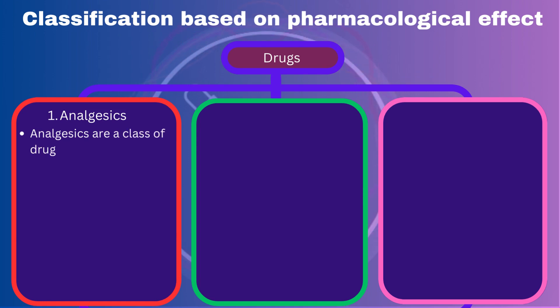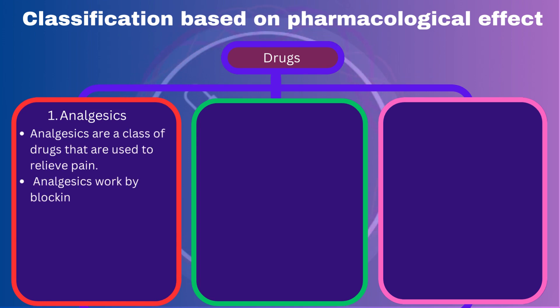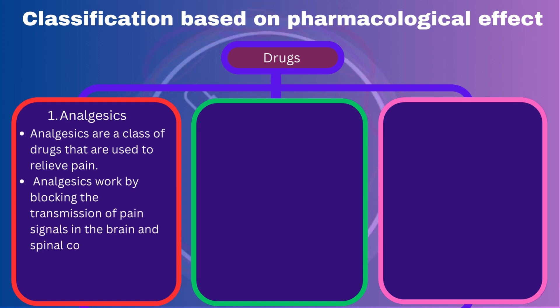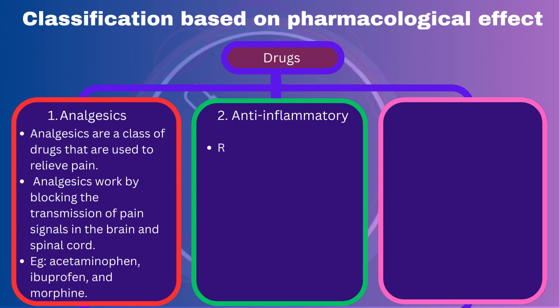Analgesics: Analgesics are used to relieve pain. They work by blocking the transmission of pain signals in the brain and spinal cord. They include drugs such as acetaminophen, ibuprofen, and morphine.